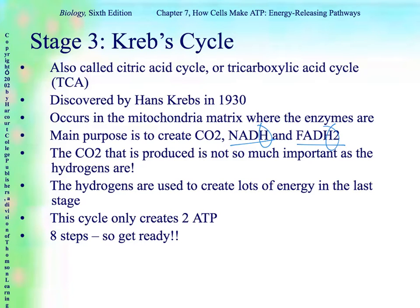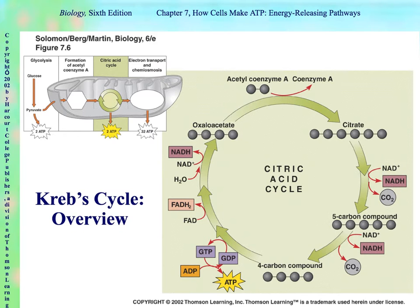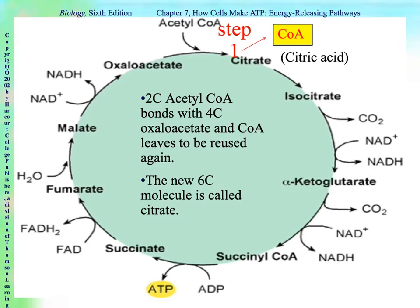This cycle only creates two ATPs. There are eight steps. Here we go. Here's our diagram again — we are in stage three, the Krebs cycle. There is a diagram in the outline that you can follow along and fill in the bullets at the same time.